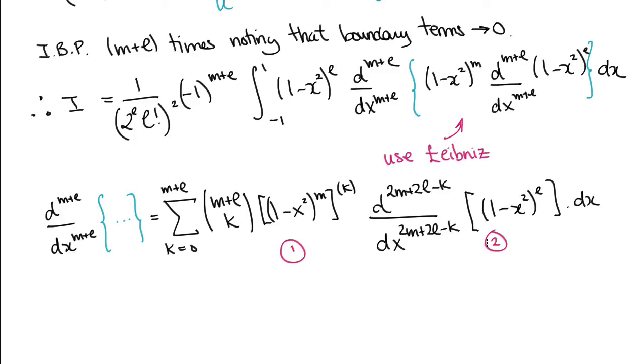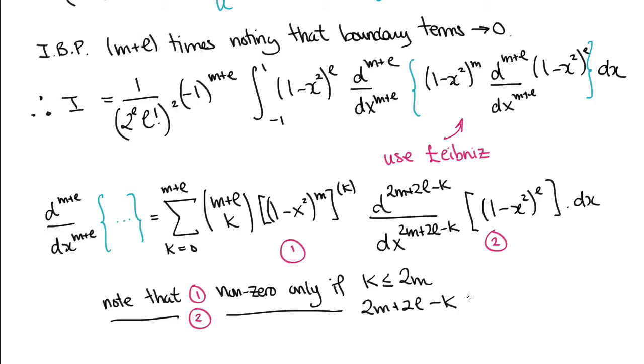This gives a summation over two factors, which we write as the circled 1 and 2. The key is that the 1 is only non-zero if the number of derivatives K is less than 2M, which is the maximal power of X. Similarly, 2 will only be non-zero if the 2M plus 2L minus K derivatives don't end up zeroing the highest polynomial,